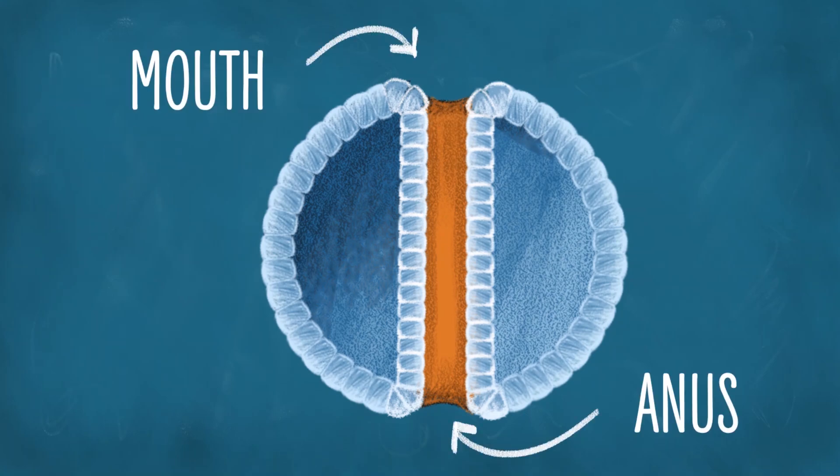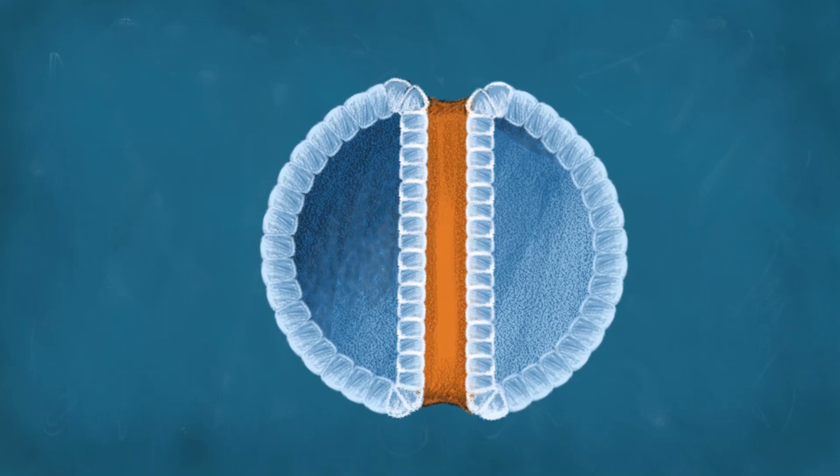In some groups, like flatworms, it doesn't quite make it all the way through. Thus, they have a mouth only, but no anus, which means that their mouth needs to do double duty.